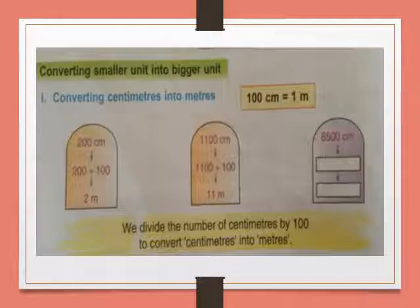Now see here: 1,100 centimetres. 1,100 centimetres divided by 100, you will get 11 metres. Now the third question is a blank and this blank is for you. 8,500 centimetres — if you divide it by 100, you will get 85 metres.